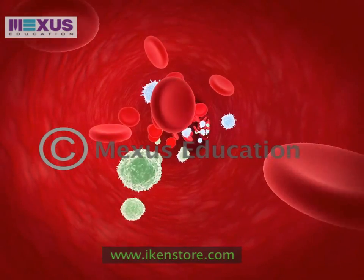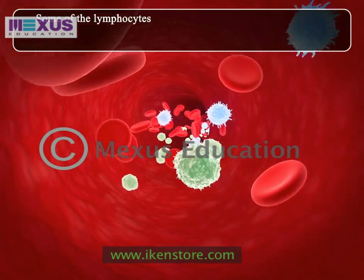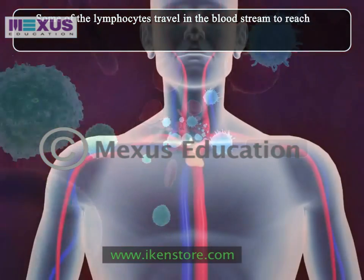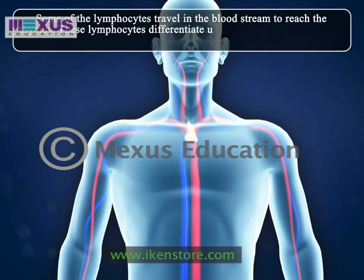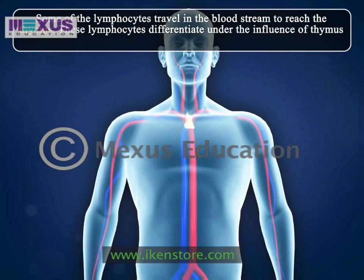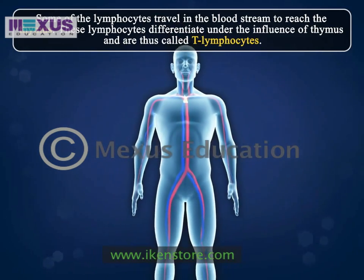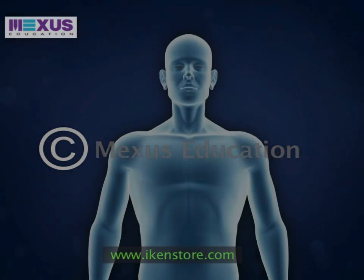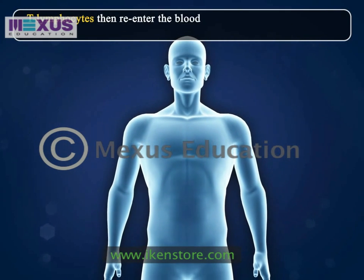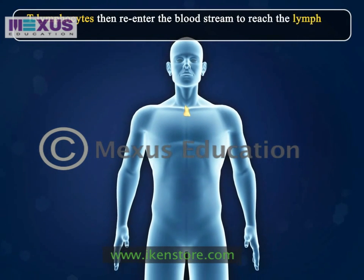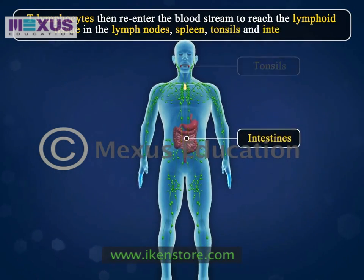The lymphocytes thus formed enter the blood. Some of them travel in the bloodstream to reach the thymus. These cells then differentiate under the influence of the thymus and are thus called T lymphocytes. T lymphocytes then re-enter the bloodstream to reach the lymphoid tissue in the lymph nodes, spleen, tonsils, and intestines.